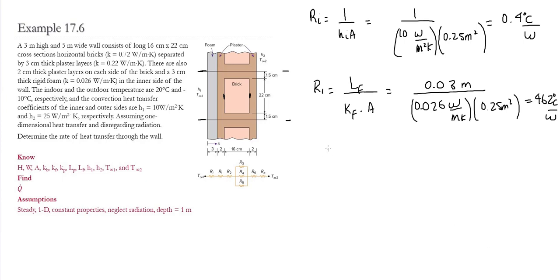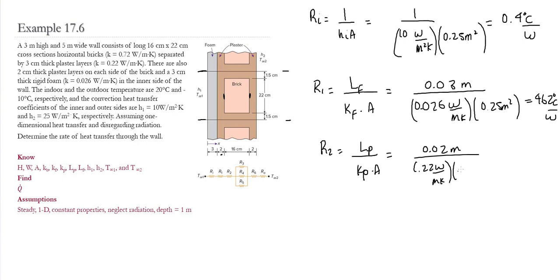R2 is the conduction resistance in the plaster on the side of the brick, calculated as L_p divided by k_p times A. The plaster thickness is 0.02 meters, conductivity is 0.22 W/mK, and the cross-sectional area is 0.25 m². This gives R2 equal to 0.36°C/W. Since R6 uses the same material and thickness, R2 equals R6.